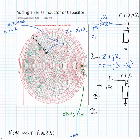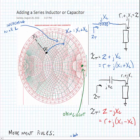Now we're going to do the same exercise but look at what happens when we add a series capacitance. The total impedance ZT looking into the capacitor is Z minus JXC, since the reactance of the capacitance is negative. In other words, the total impedance is R plus J times the initial reactance minus the capacitive reactance. If we plot this on a chart, the capacitor causes movement on a line of constant resistance downward on the chart, decreasing with frequency or with increasing capacitance.